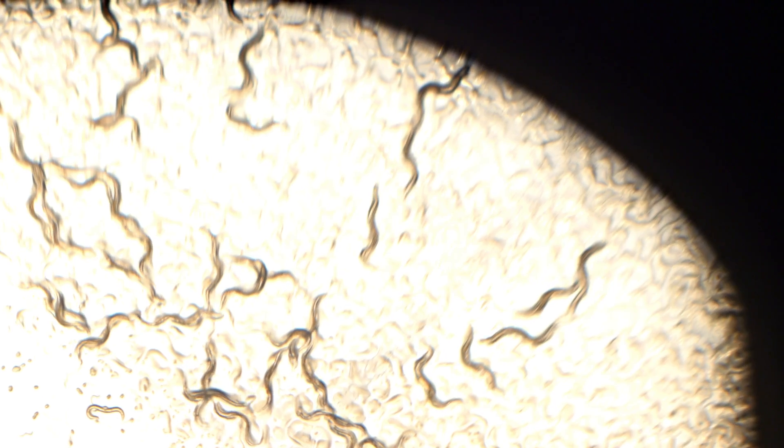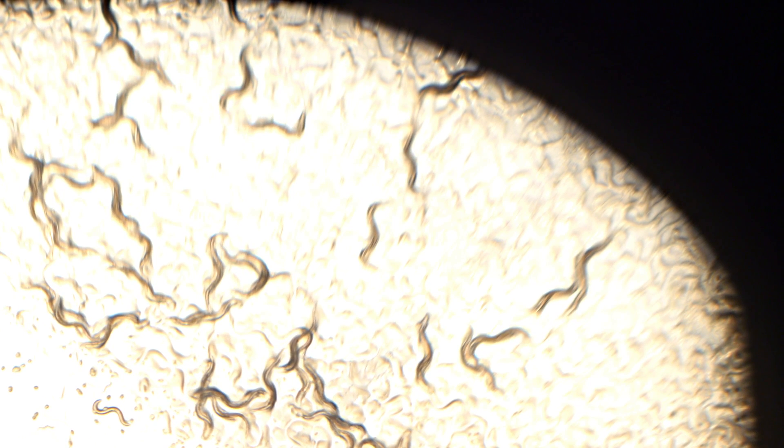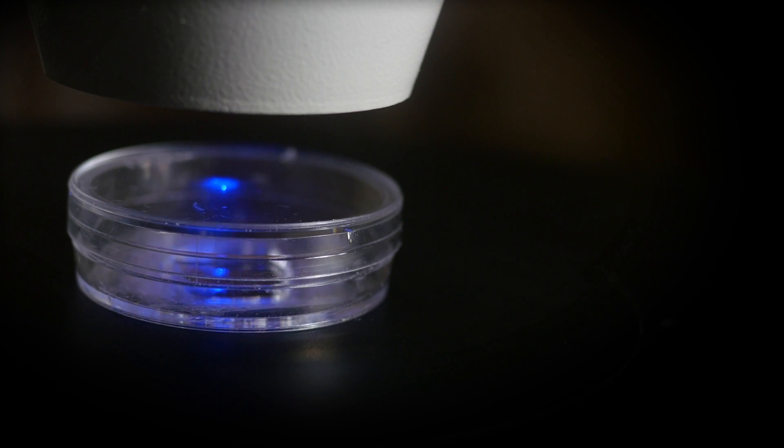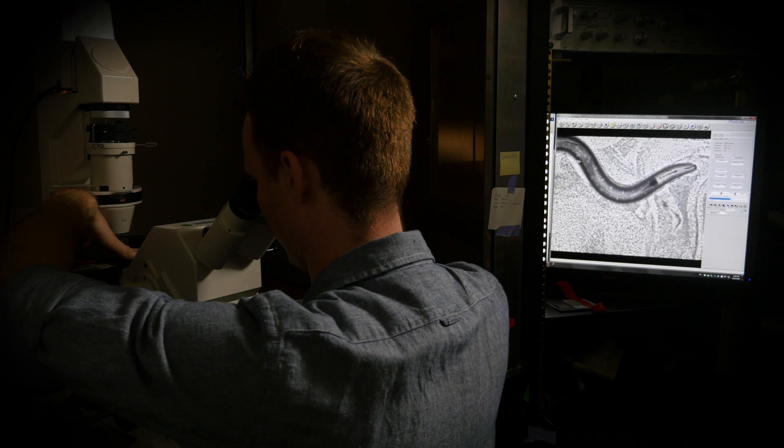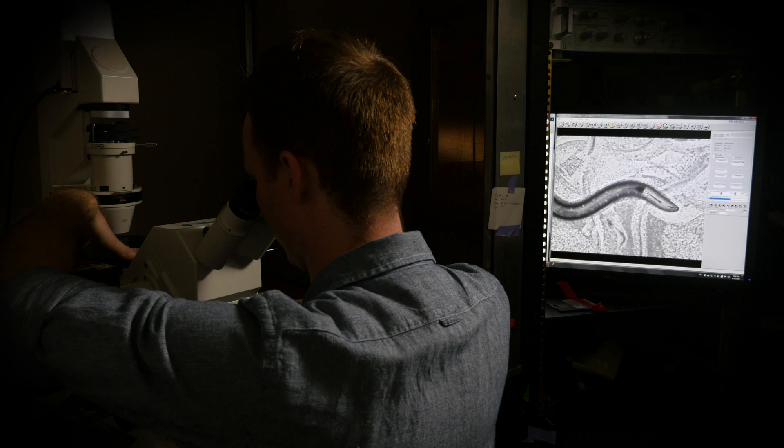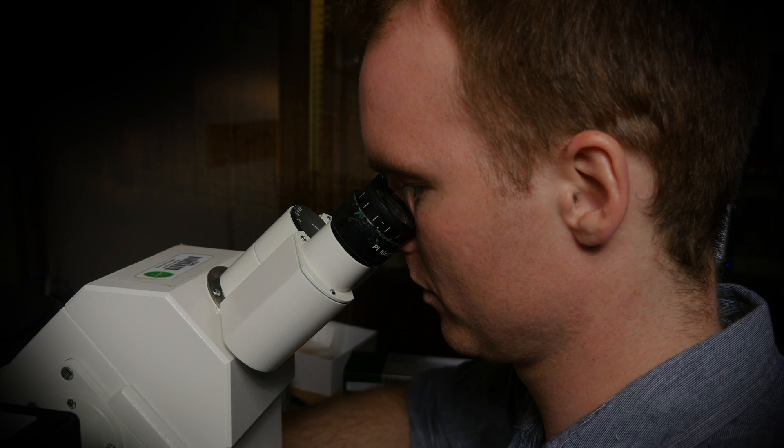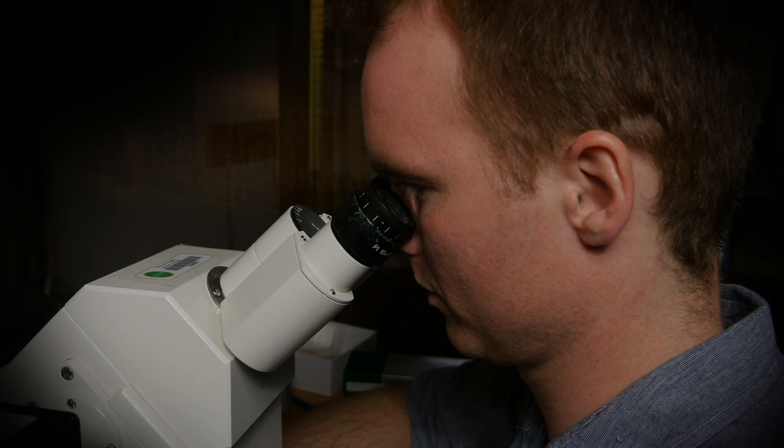One behavior the community's been really interested in is the ability of worms to detect and avoid bright ultraviolet or blue light. That makes sense in terms of the worm's natural behavior because the worm's transparent. If the worm ever went into direct sunlight, it would run the risk of damaging its DNA.